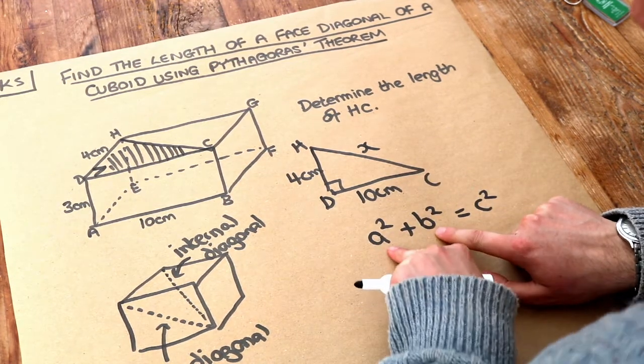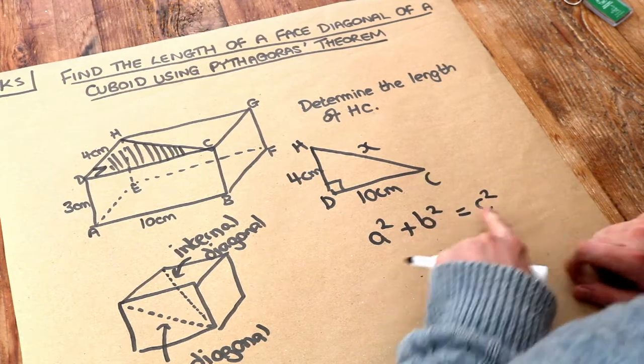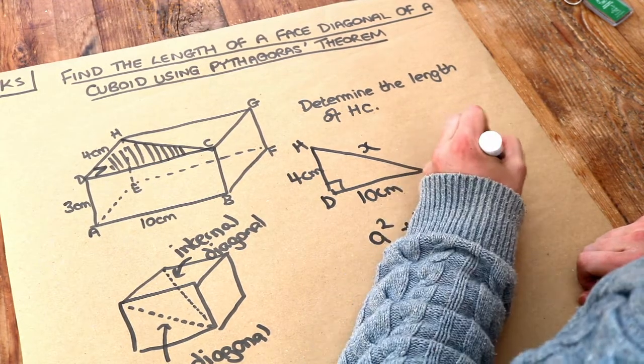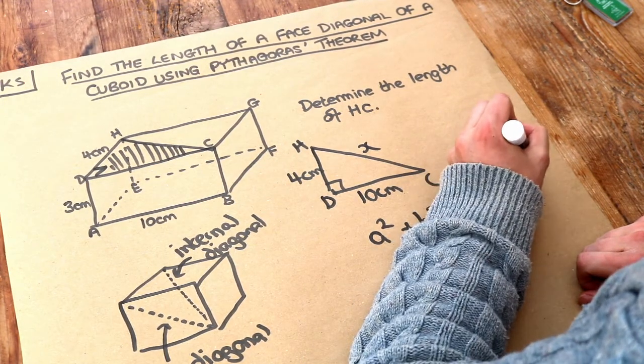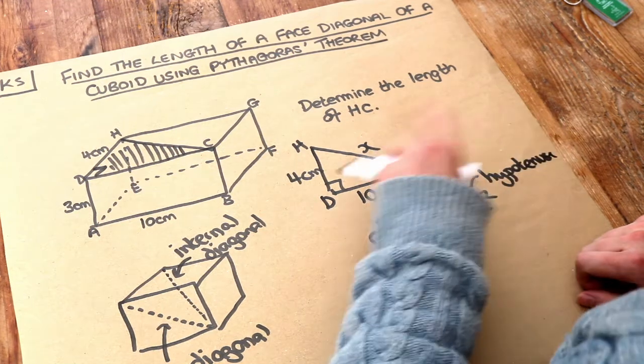Where a and b are the two shorter lengths of your right-angled triangle, and c is the hypotenuse, the longest length of your triangle, which is always opposite the right angle.